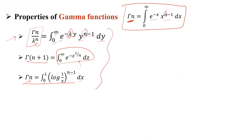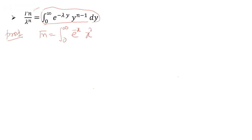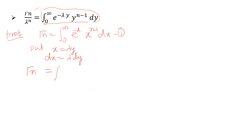Let's prove Property 1: that the integral from 0 to infinity of e raised to power minus λy, y raised to power n minus 1, dy equals Gamma(n)/λⁿ. We know Gamma(n) = integral from 0 to infinity of e raised to power minus x, x raised to power n minus 1, dx. We substitute x = λy, so dx = λ·dy. The limits remain 0 to infinity.